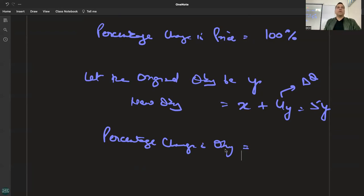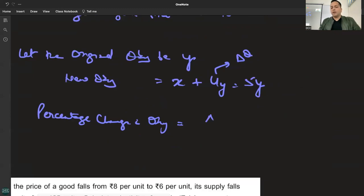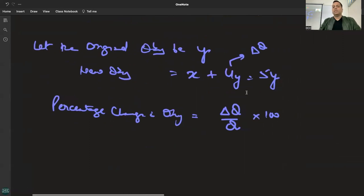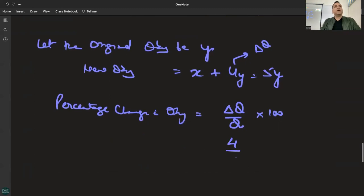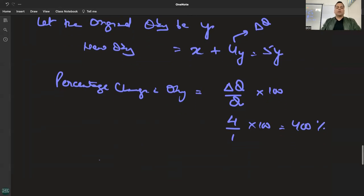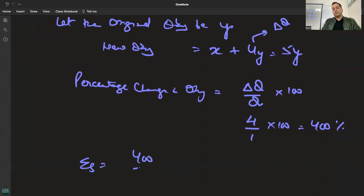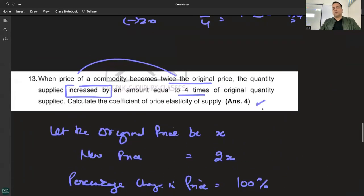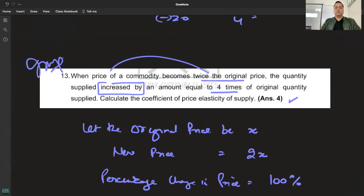The formula for percentage change in quantity is: change in quantity divided by original quantity into hundred. Change is 4, original was Y, so 4Y upon Y into 100 equals 400 percent.